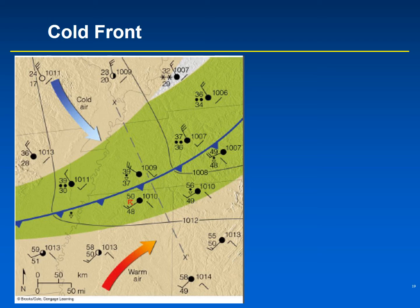The blue filled-in arrow labeled 'cold air' shows the direction of cold air flow — it's coming from the northwest, north of the cold front. South of the cold front, air is coming from the southwest.